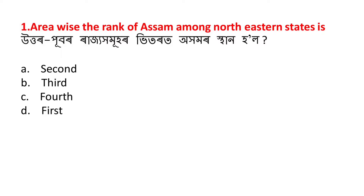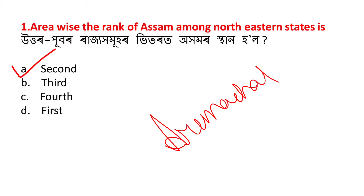Aamaraazir prathom prasna: Area wise, the rank of Assam among the northeastern states is - uttarpubar rajjahumohar bhitharad aham aar shthan ki? The answer is second. Uttarpuban rajjahumohar bhitharad Assam is the second largest state by area.